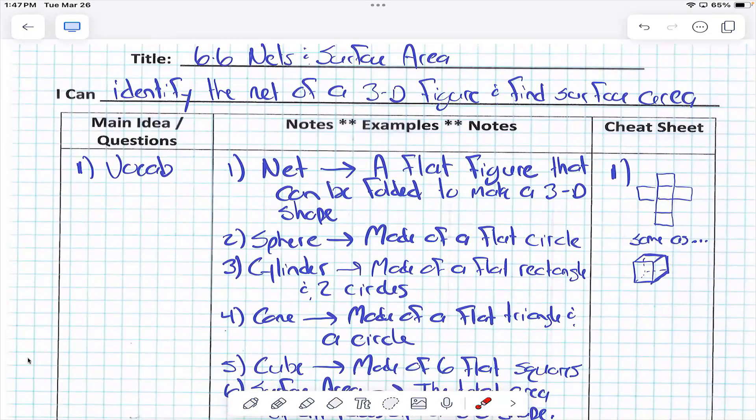A net. A net is what kind of shape? It's a flat figure or a flat shape that can be what? Folded and when we fold it what does it turn out to make? So a net would be something that's flat that you can fold to make into a 3D shape.